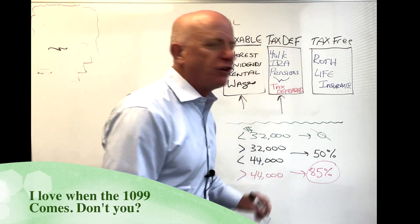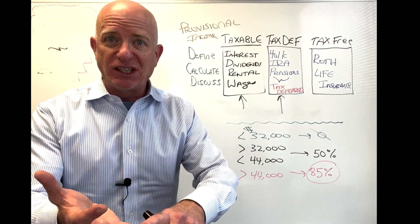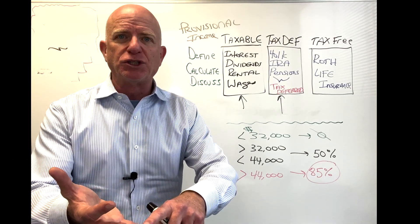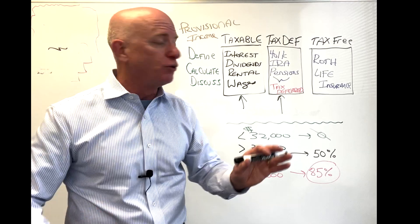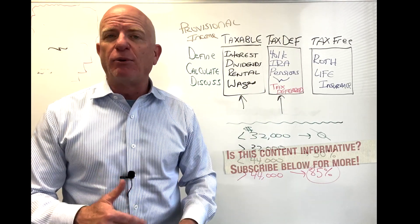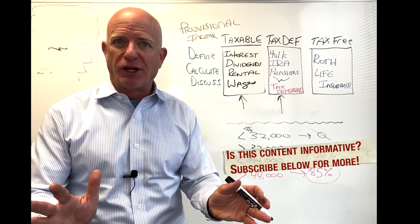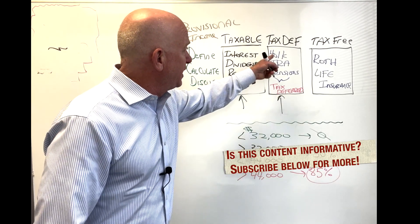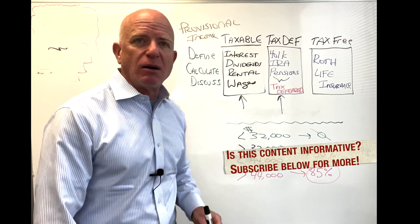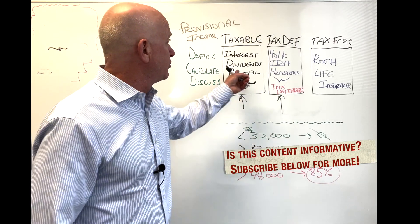This is anything that comes out of your tax-deferred bucket. This could be RMDs, required minimum distributions, this could be any kind of a distribution, also pensions. Often people who have big pensions can't avoid the tax they pay on their Social Security. So anything that comes out of the tax-deferred bucket, anything that comes out of the taxable bucket, these are your income sources. If you have a part-time job, that's in the taxable bucket.